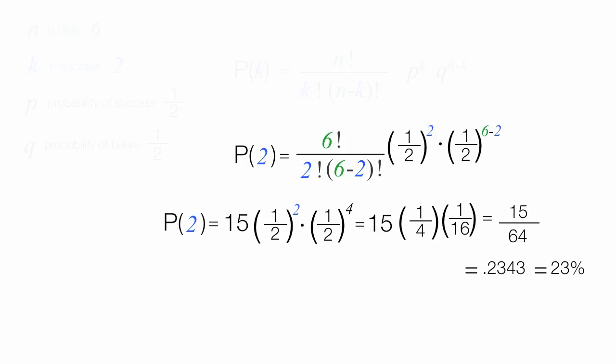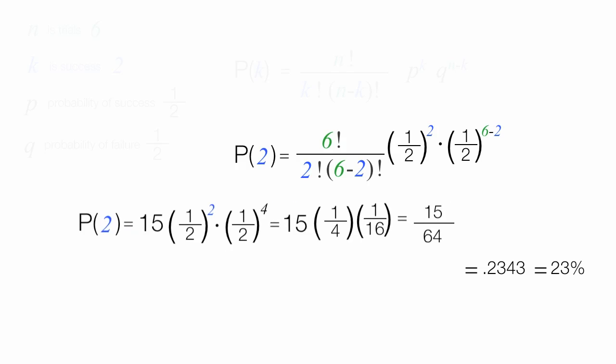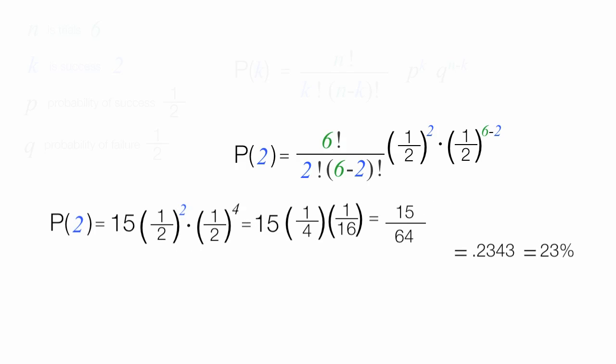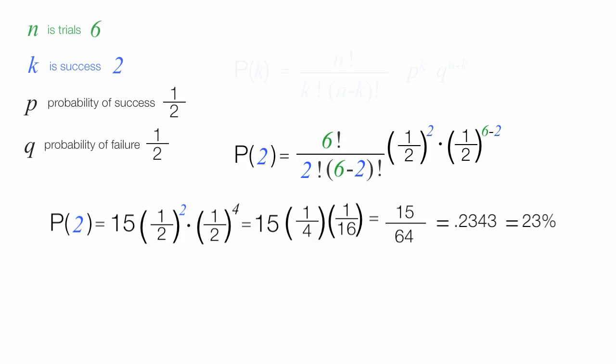This is equal to 0.2343, or about 23% of the time. If I flip a coin six times, the probability of getting exactly two tails is 23%.